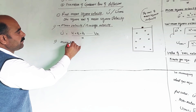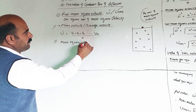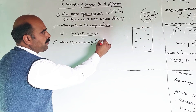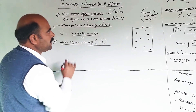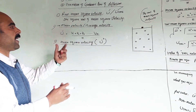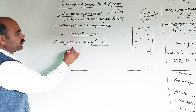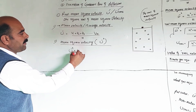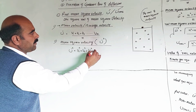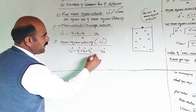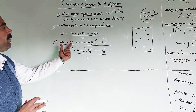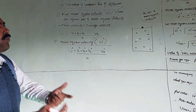This is also called average velocity. The second type is mean square velocity. Mean square velocity is the average of the squares of velocities: (v1² + v2² + v3² + ... + vn²) divided by the total number of molecules N.